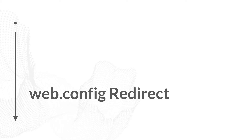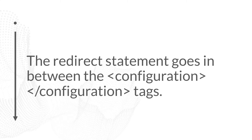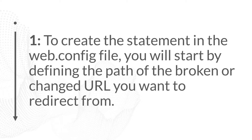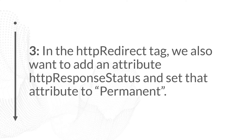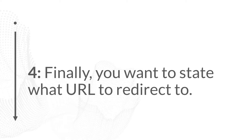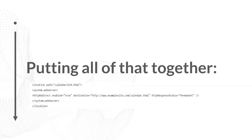We can do something similar on a Windows server with a web.config redirect. On a web.config file, the redirect statement goes between configuration tags. You define the path of the broken or changed URL you want to redirect from, then define the destination. In the HTTP redirect tag, you also add an attribute of HTTP response status and set it to 'Permanent' instead of 'Temporary' — this is how you define 301 versus 302 in a web.config file. For example, redirecting from '/calendar/634.html' to 'http://www.examplesite.com/calendar.html', noted as a permanent redirect.